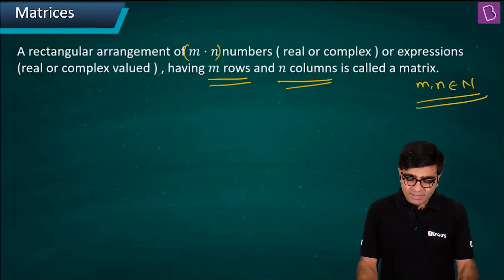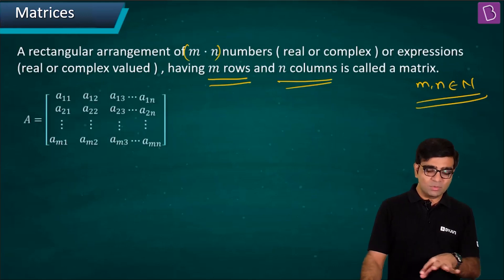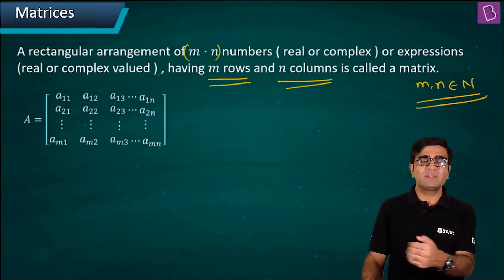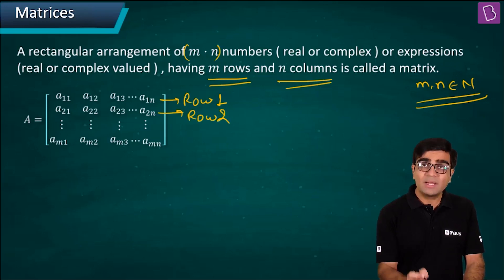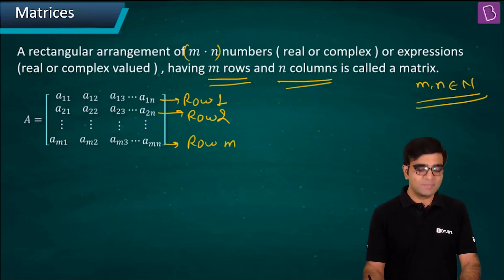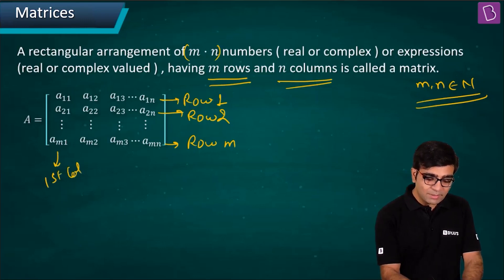If I go for a very general representation, I have a11, a12, a13, and so on. This will be my first row, row one. The second one becomes row two, and so on. I have m rows, so this is my row m or mth row. Similarly, this is my first column, this is the second column, and so on.